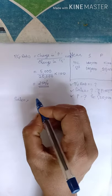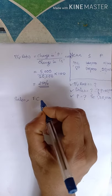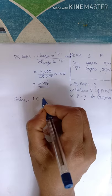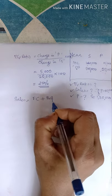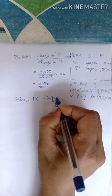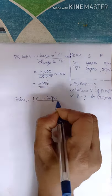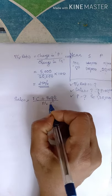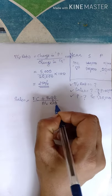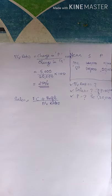Sales is equal to fixed cost plus profit — or loss is equal to minus — divided by PV ratio. This is the formula we will use throughout this chapter.